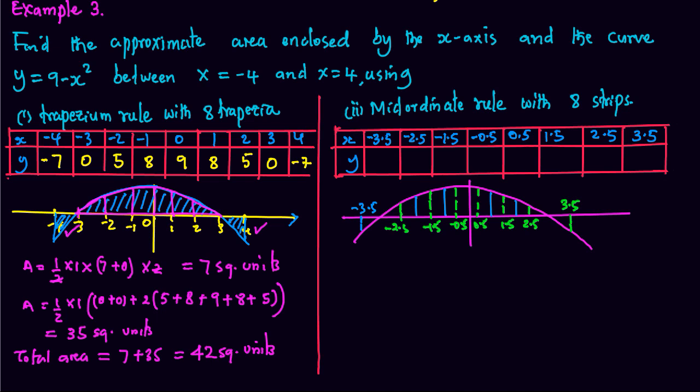So the area, using mid-ordinate rule, is equal to H into Y1 plus Y2 plus Y3 plus Yn. Now, we don't have negative lengths. The negatives only indicate that the areas are below the x-axis. So we need to get the lengths of the mid ordinates by substituting for the values of x in the equation.